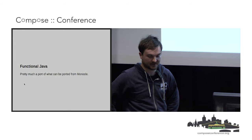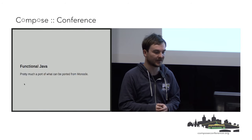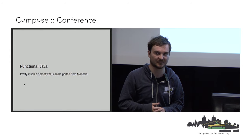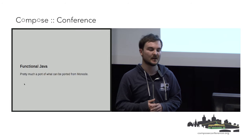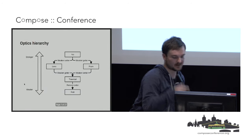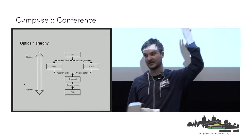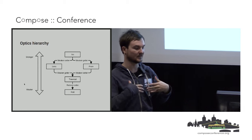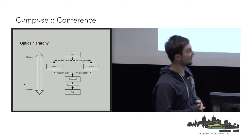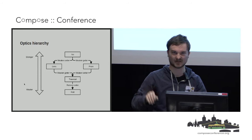Functional Java is a library that tries to implement lenses, but it has some downsides. It can't encode everything that Monocle can encode, specifically due to the lack of higher-kinded types, which prevents encoding certain things. In this hierarchy, traversal uses higher-kinded types. Functional Java tries to implement it but it's lacking a lot of power. If you're using Functional Java you'll probably end up with iso, lens, prism, and fold as the main ones.